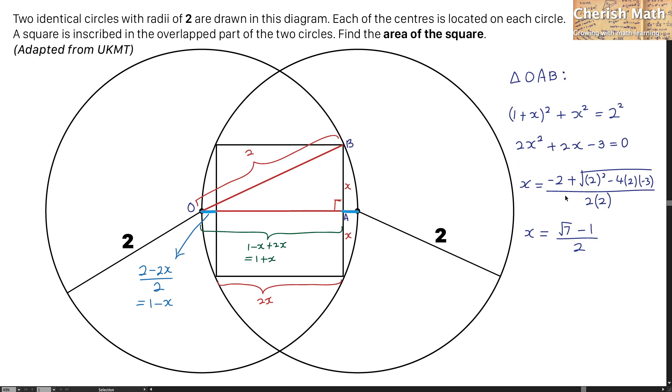In the final step, I am trying to work out what is the area of the square by using the side length of 2x times 2x. And that is equal to 4x squared. I have to substitute the value of the x here into this. And now, simplifying it, I am getting the value as 8 minus 2 times the square root of 7 as the final answer for the area of the square.